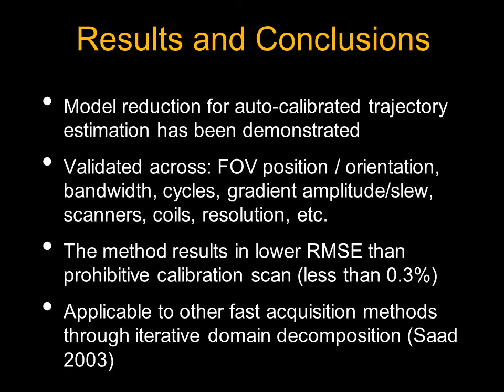In summary, we demonstrated a model reduction technique for auto-calibrated trajectory estimation, validated across many protocol parameters including field of view, position, orientation, wave gradient cycles, gradient amplitude and slew, different scanners from 1.5, 3, and 7T, coils ranging from 20 to 64 channels, and different resolutions seen in clinical settings. We showed equivalent accuracy to prohibitive calibration scans, and believe this approach will be applicable to other fast acquisition methods through different numerical techniques.